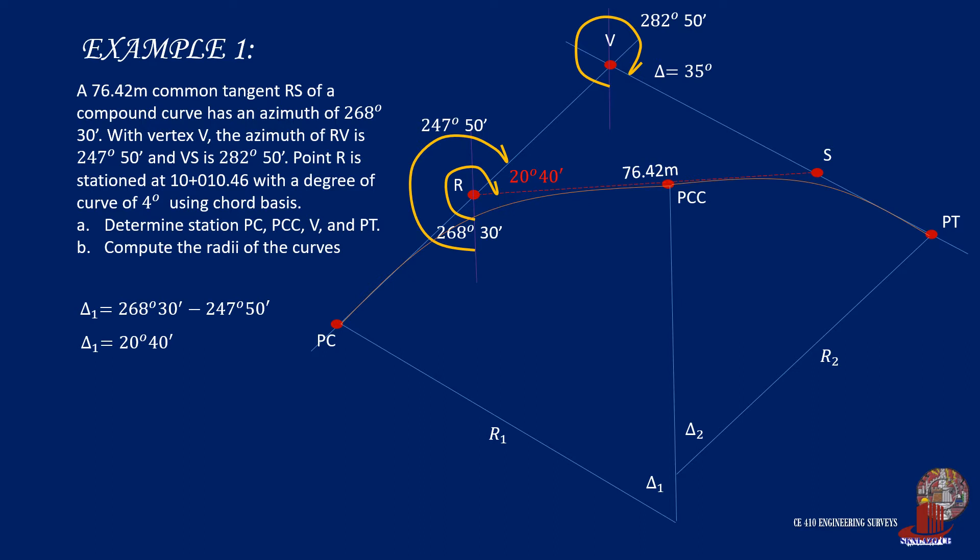And with the definition of angle delta as the summation of the central angles, we can compute for delta 2 by subtracting delta 1 from 35 degrees, and that would yield 14 degrees 20 minutes.